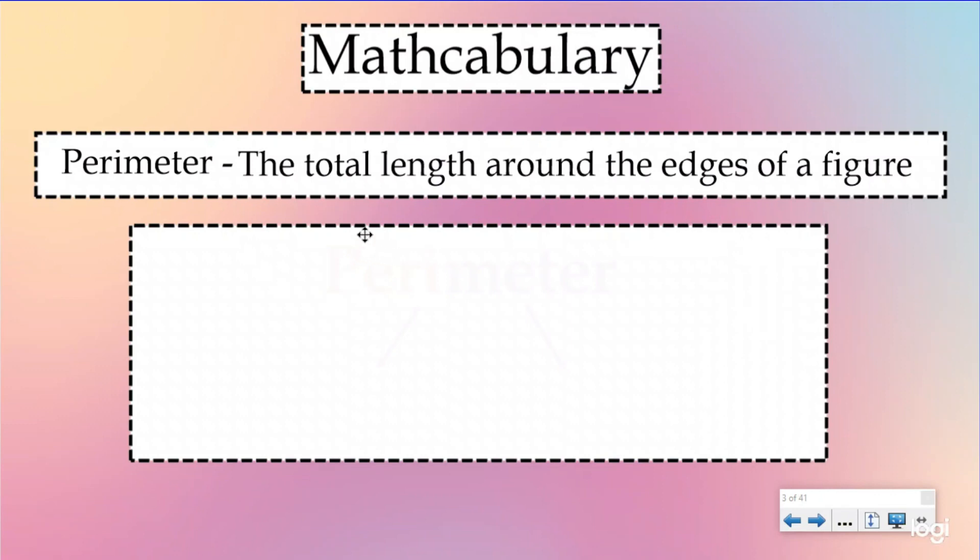So we're going to be going around the edges of a figure. So here we have a rectangle, right? And if I followed the dotted line all the way around and I measured that with a unit, could be meters, centimeters, inches, feet, that would be the perimeter.